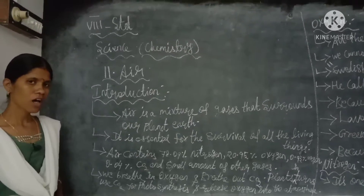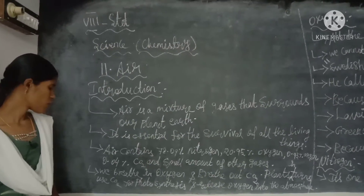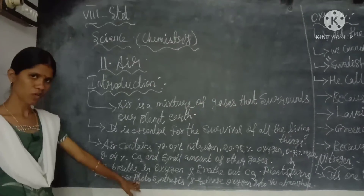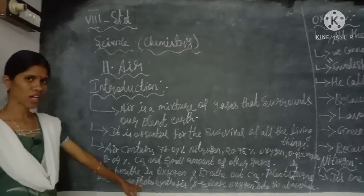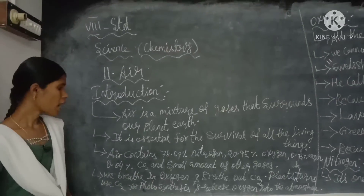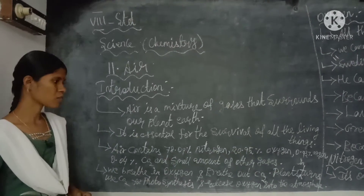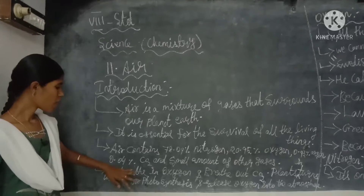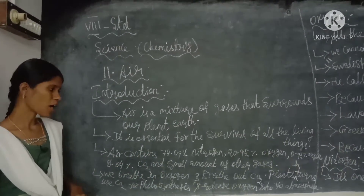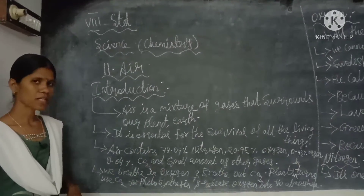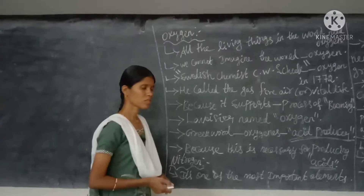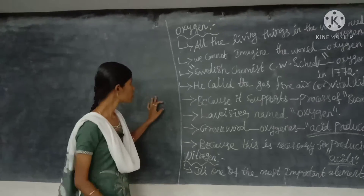Photosynthesis is the process which helps produce food for plants. Plants use carbon dioxide and produce and release oxygen into the atmosphere. So we inhale oxygen and exhale carbon dioxide, but plants do the opposite of us.